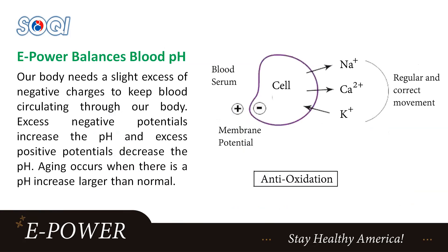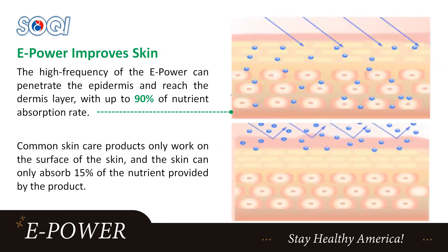Our body needs a slight excess of negative charges to keep blood circulating through our body. Excess negative potentials increase the pH, and excess positive potentials decrease the pH. Aging occurs when there is a pH increase larger than normal. This is one of the main reasons why a lot of people use this machine for cosmetic benefits. This machine actually comes with a pen — you can use the pen while using the ePower to do some facelifts and those kinds of things, to make the skin tighter.